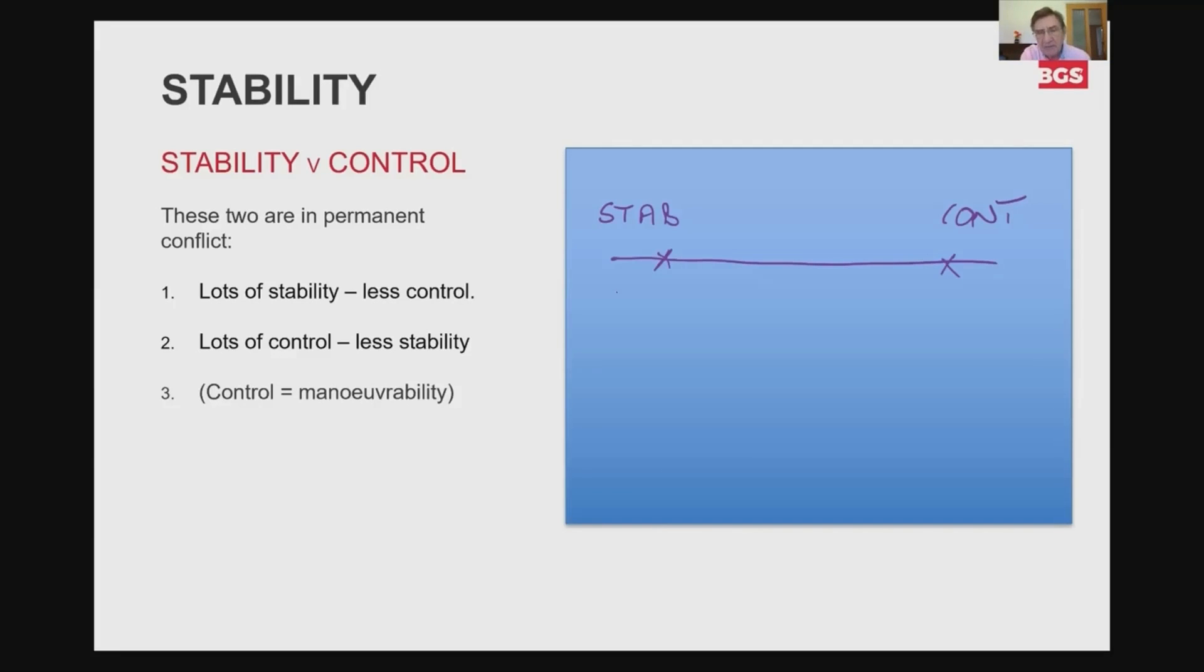If you're flying a fighter aircraft where you need a lot of manoeuvrability, then the design would probably air towards having lots of control, but less stability. And modern fighters are designed such that they're not stable. The stability is actually gained via computer rather than the aerodynamics. So it's a different way of achieving stability.